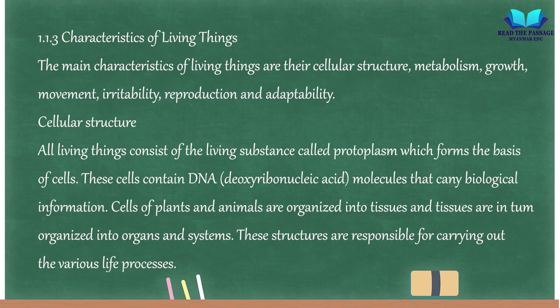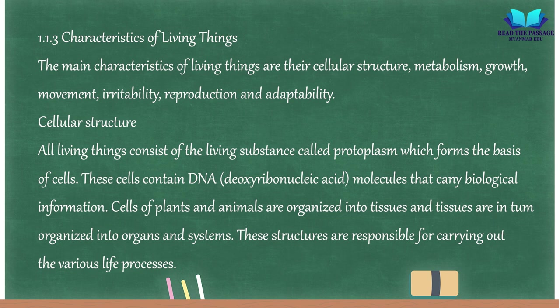1.1.3 Characteristics of Living Things. The main characteristics of living things are their cellular structure, metabolism, growth, movement, irritability, reproduction, and adaptability. All living things consist of the living substance called protoplasm, which forms the basis of cells. These cells contain DNA (deoxyribonucleic acid) molecules that carry biological information. Cells of plants and animals are organized into tissues, and tissues are in turn organized into organs and systems. These structures are responsible for carrying out the various life processes.